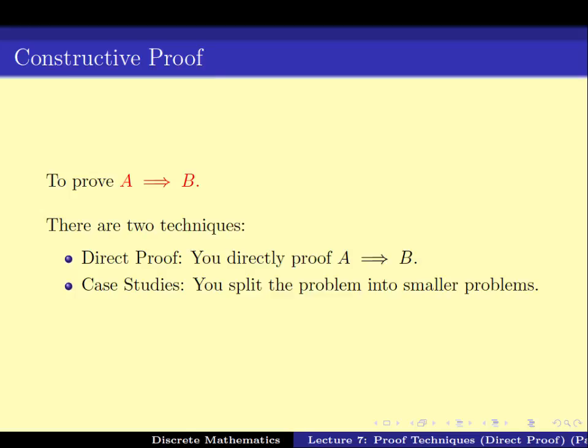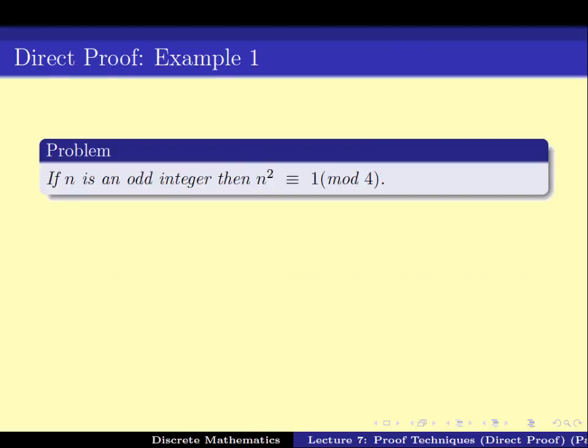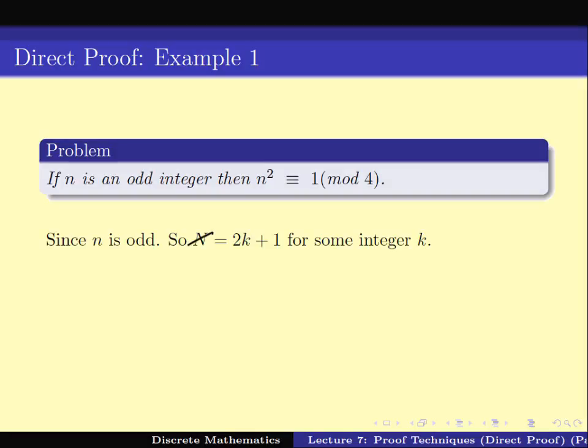Now let us start with the first problem. It is given that n is an odd integer; then prove that n² ≡ 1 mod 4. If n is an odd integer that means n = 2k + 1 for some integer k. That is the definition of oddness.